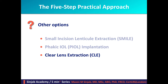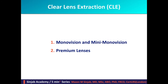This procedure consists of replacing the accommodating clear crystalline lens with an artificial non-accommodating IOL. Based on that, we can discuss this option in terms of two methods: the mono and mini-mono vision method, and the premium lens method.